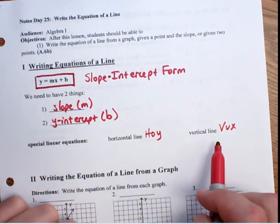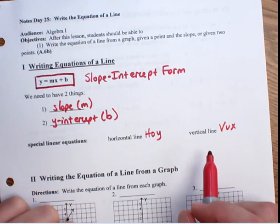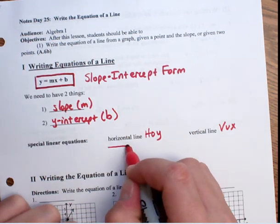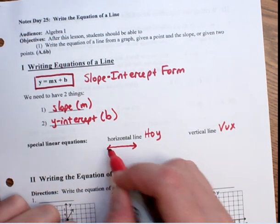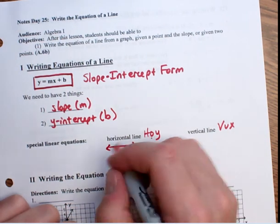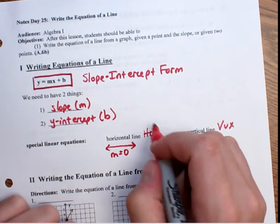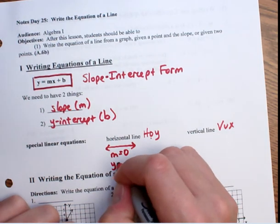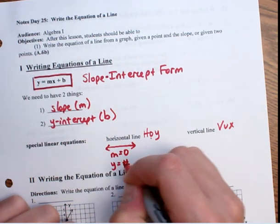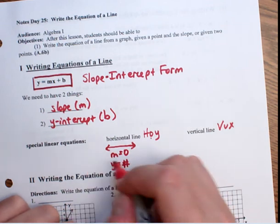Horizontal is a line that goes across like this. The O in HOY is for the zero slope. And the Y is for the equation, y equals some number. That is the equation of the line. And that's what we're focused on today.